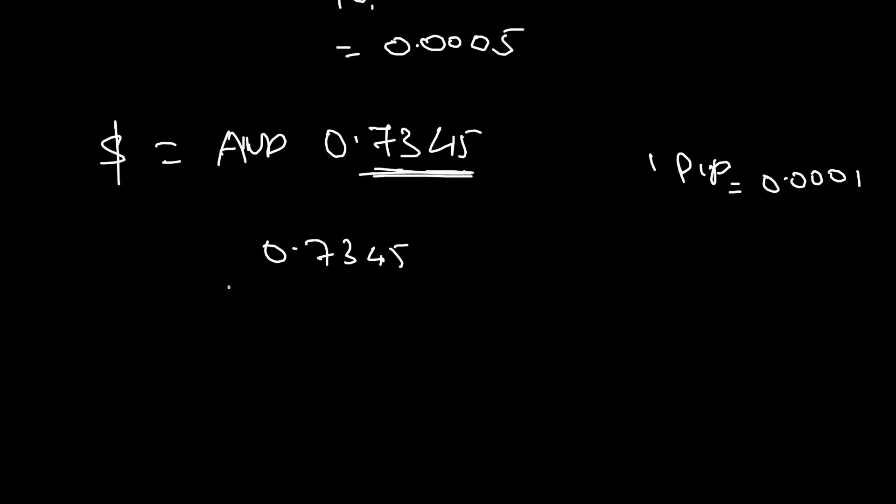That means let us say it has gone up by 1 PIP. So, 0.0001. So, the new exchange rate is 0.7346.